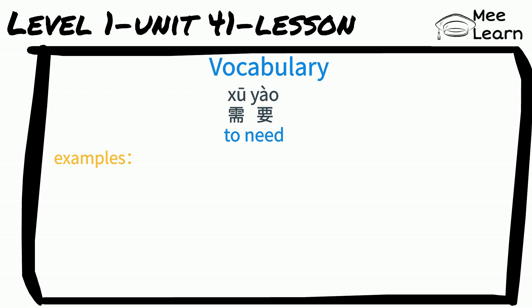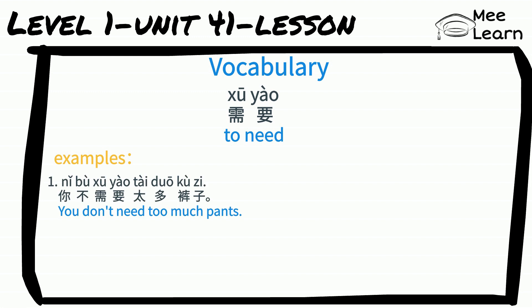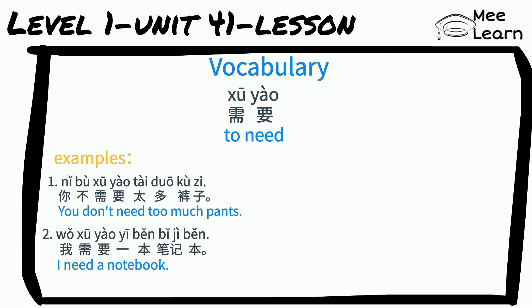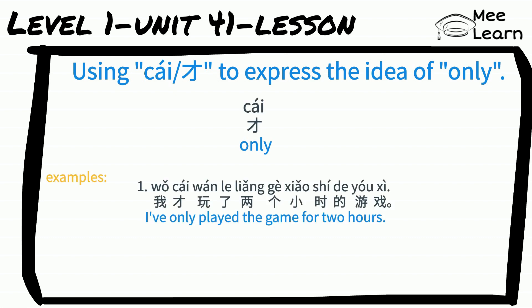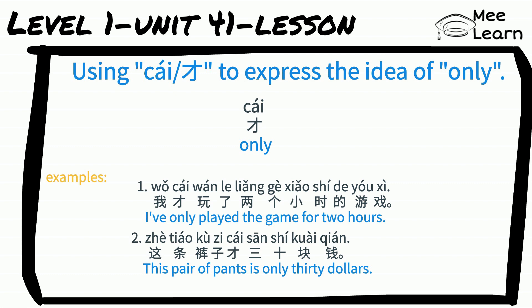需要 means 'to need.' For example: 你不需要太多裤子 — You don't need too many pants. 我需要一本笔记本 — I need a notebook. Using 才 to express the idea of 'only.' For example: 我才玩了两个小时的游戏 — I've only played the game for two hours. 这条裤子才三十块钱 — This pair of pants is only $30.